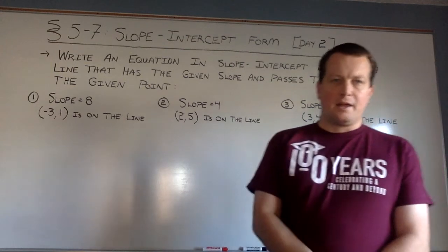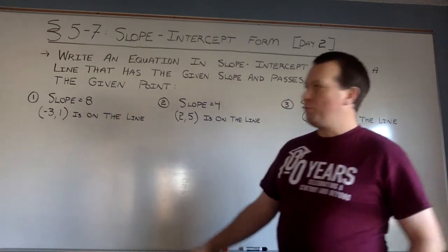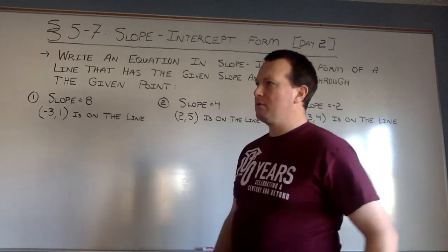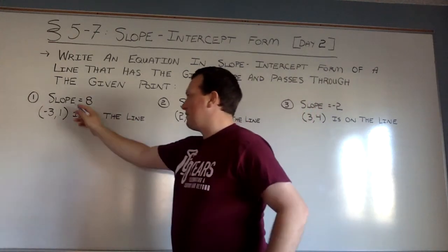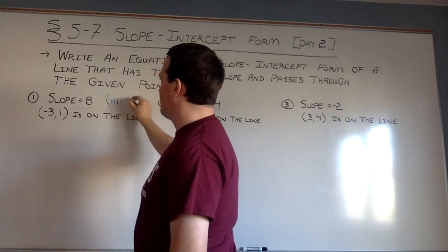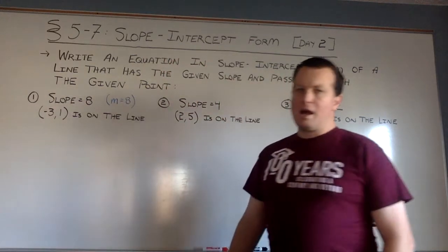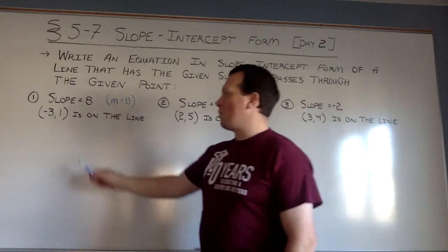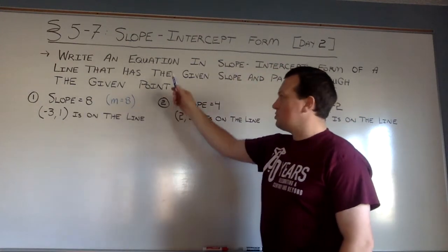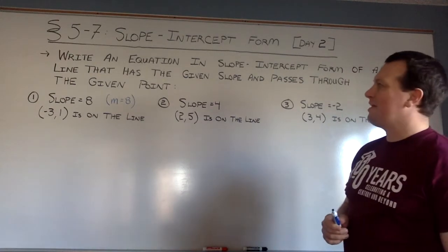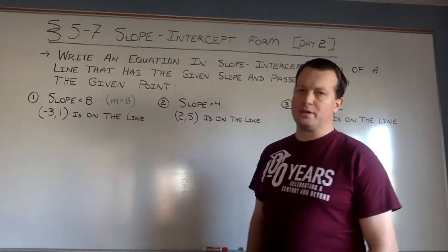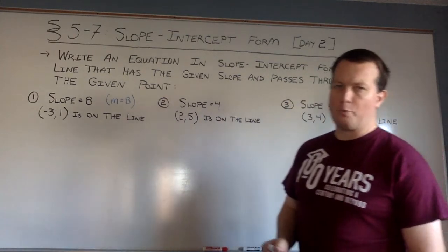What we got going on today is I am going to give you the slope of a given line. In example 1, for instance, I'm telling you that the slope of this line is 8. I am also going to give you an ordered pair that is on the line, and what I want you to do is to write an equation in slope-intercept form that has this given slope and passes through the given point, and I want you to write it in slope-intercept form.